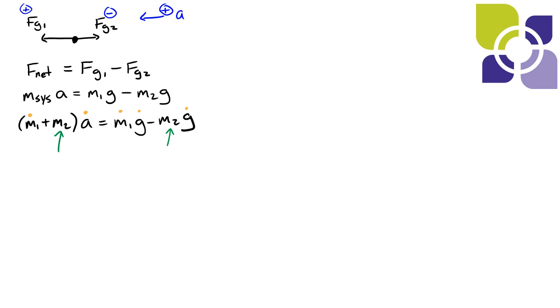So m1 which we know to be 25 kilograms plus m2 times the acceleration which we know to be 2.5 meters per second squared is equal to m1 is 25 kilograms times 9.8 minus m2 times 9.8.